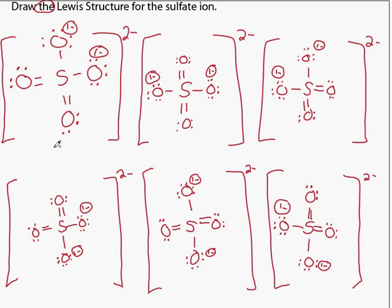So the Lewis structure is an average or a hybrid of all six resonance contributors.